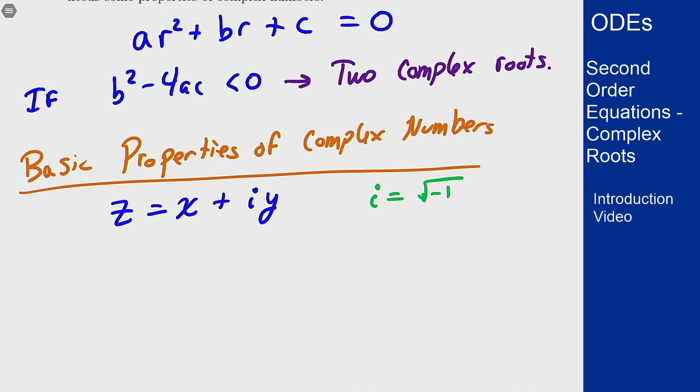For this complex number we would have that the real part of z is the part that does not have the i in front of it, that's x, and the imaginary part of z is the part with the i, so that's y.